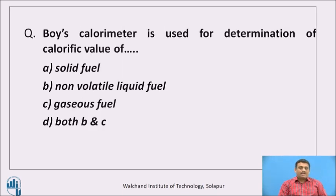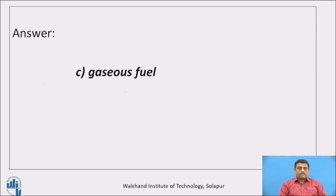I would like to ask you one question. Boyce calorimeter is used for determination of calorific value of: option A, solid fuel; option B, non-volatile liquid fuel; option C, gaseous fuel; option D, both B and C. Think for a moment. The correct answer is option C, gaseous fuel.